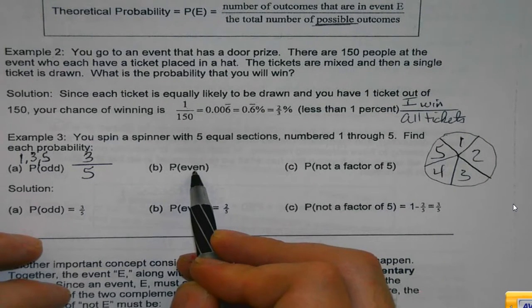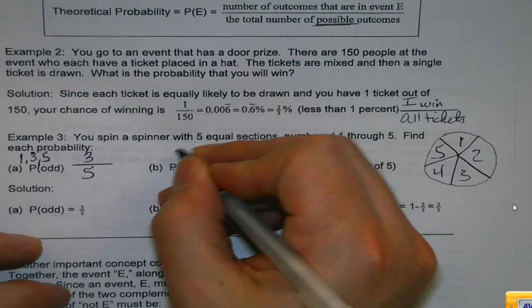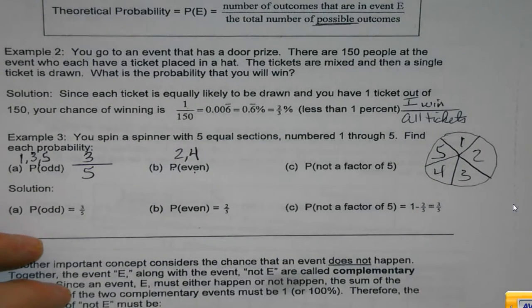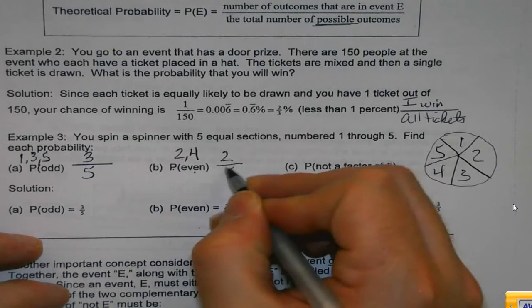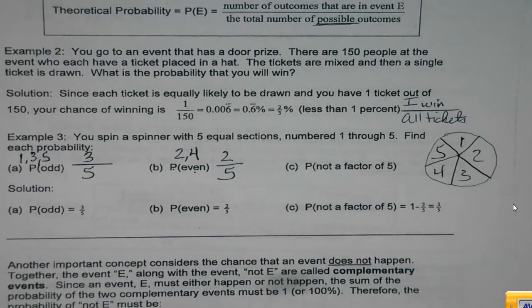Probability of rolling or spinning, in this case, an even. Well, my even numbers on there are two and four. So I have two options out of five. But here's the one that for some reason tends to get people. Probability not a five.